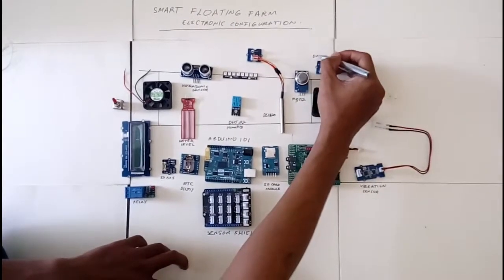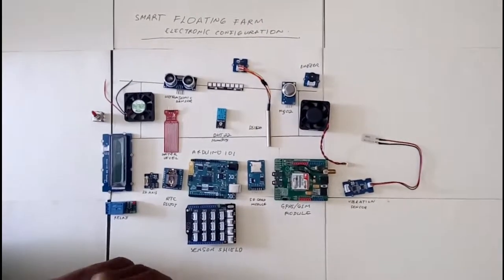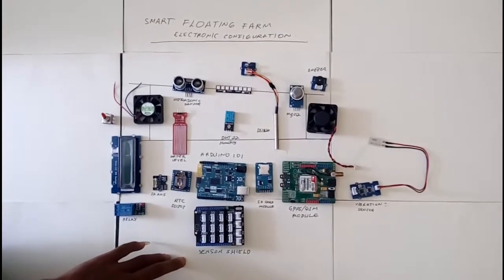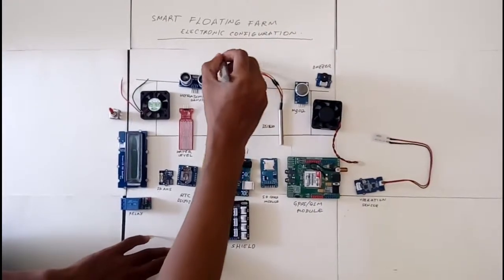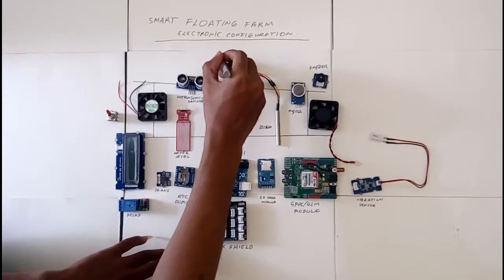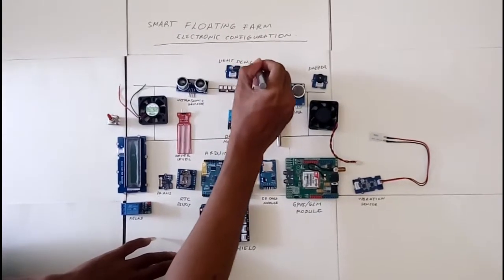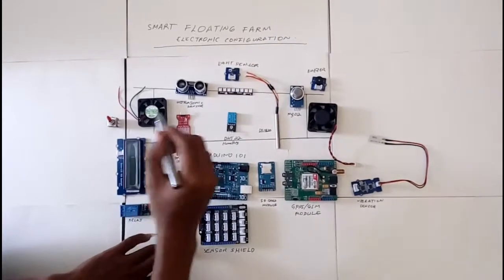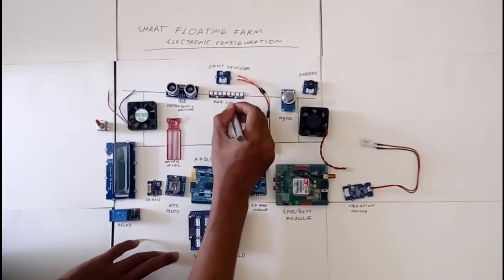We also have a photodiode to measure the light. The photodiode will connect to the RGB LED, so if it's night, the RGB will be activated and still illuminate the plant.